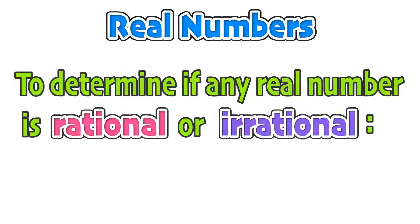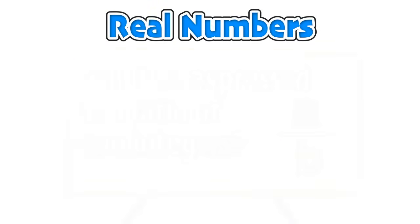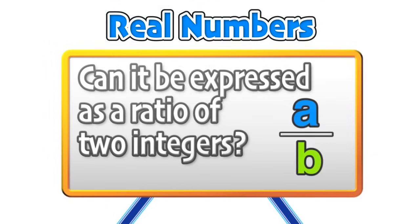When a number is irrational, it never repeats and it never terminates — it goes on forever. Now we can go ahead and visually explore how to determine if any real number is rational or irrational. We can start with the question: can the number be expressed as a ratio of two integers?